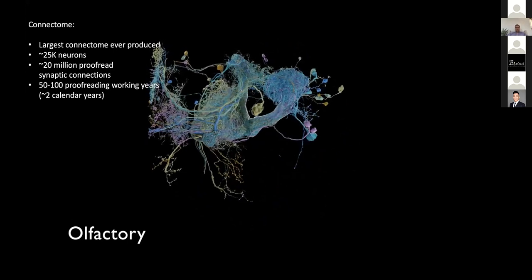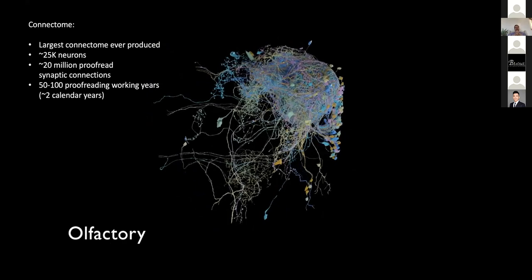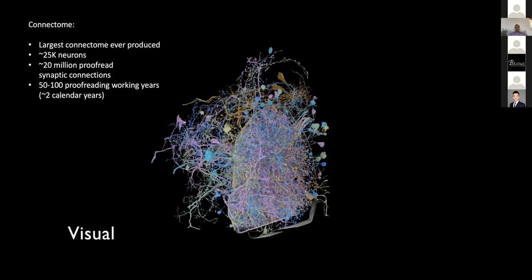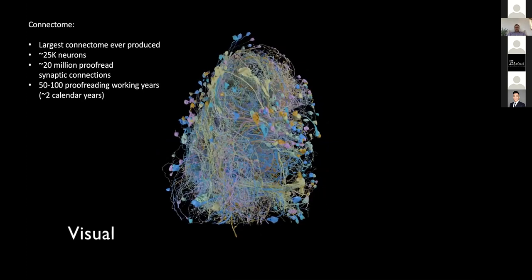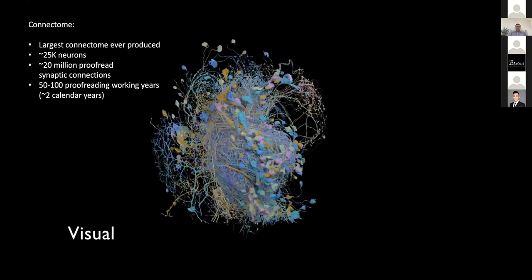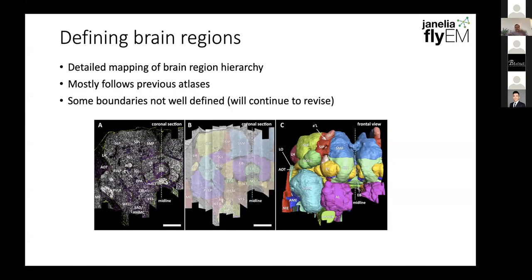You only have to show a subset of these neurons for things to very quickly look like a bowl of spaghetti, so we had to really subset the neurons into different regions to make it more interpretable. This effort took a lot of proofreading effort — about 50 to 100 proofreading working years over about a two-year period. We actually have over 50 technicians at Janelia that were actively involved in this dataset, in addition to a team of lab scientists.